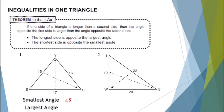For our largest angle, the longest side measures 17, and the opposite angle to it is angle Y. Therefore, our largest angle is angle Y. For number 2, let's identify the smallest angle. The shortest side is opposite angle N. Therefore, our smallest angle is angle N.